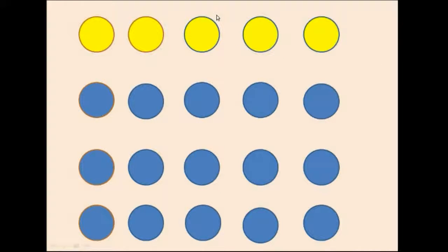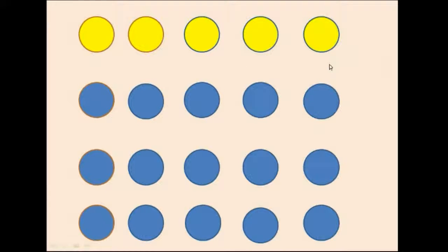Suppose you took 20 healthy individuals and followed them over time, and during that time period you notice that 5 of them developed a disease, here represented as yellow. That would mean the incidence rate in this data would be 5 over 20, because we had 5 new cases, and 5 divided by 20 is also 1 fourth, or 25%, so we can say that that is the incidence.